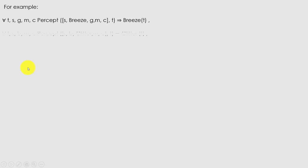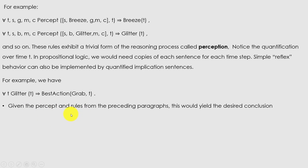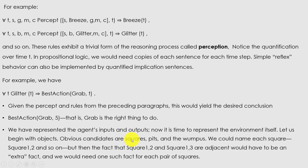The raw percept data implies certain facts about the current state. These rules exhibit a form of the reasoning process called perception, with quantification over time t. In propositional logic we would need copies of each sentence for each time step. Simple reflex behavior can also be implemented by quantified implication sentences. Now we have represented the agent's input and output — it is time to represent the environment itself. Obvious candidate objects are squares, pits, and wumpuses.